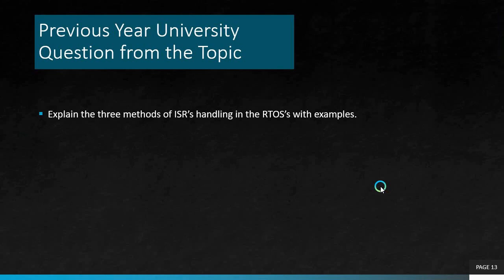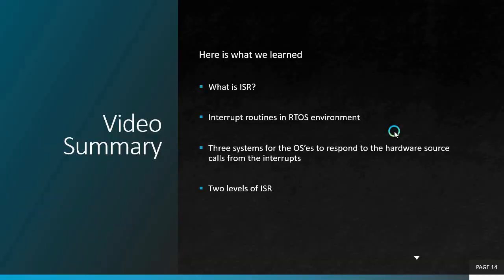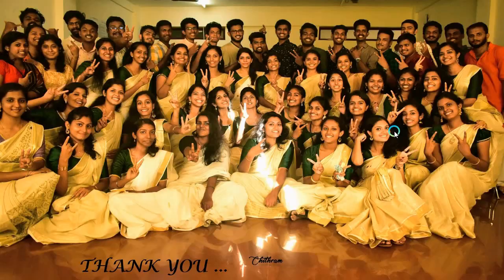A previous year question from this topic: explain the three methods of ISR handling in RTOS with examples, using corresponding figures and proper explanations as discussed. In summary, we learned: what is an ISR, interrupt routines in an RTOS environment, three methods for the OS to respond to hardware source calls from interrupts, and the two levels of ISR — fast level ISR and slow level ISR. Thank you.